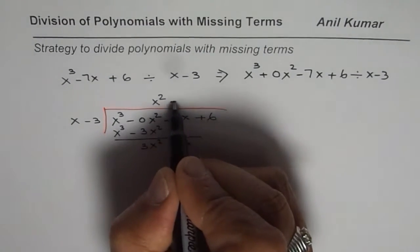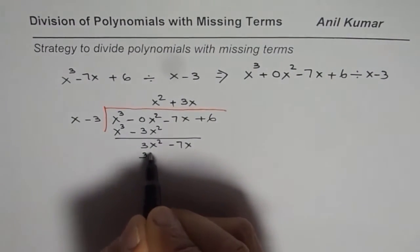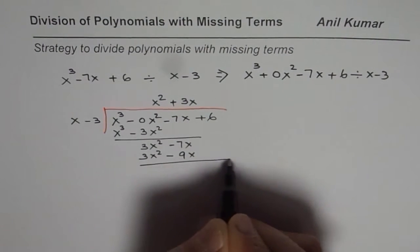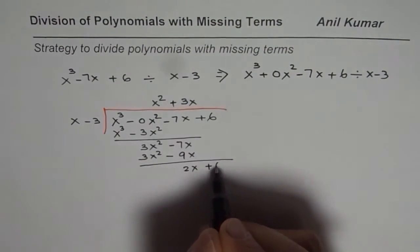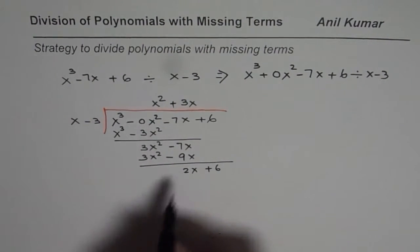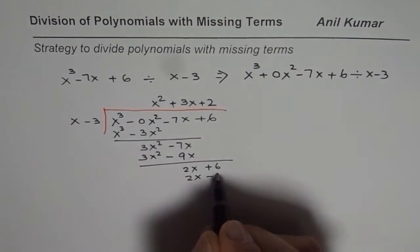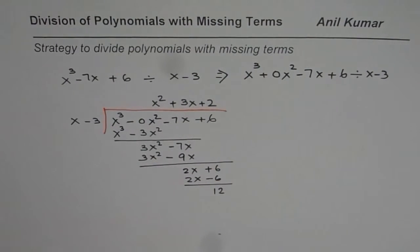Let's continue the process. We need to multiply now by 3x. Then you get 3x squared minus 9x. And take away 9x will give you 2x here. Bring down 6 which is with positive sign. You have to now multiply by number 2. So you get 2x minus 6. When you do 2x minus 6, you get 12. So 12 is your remainder.